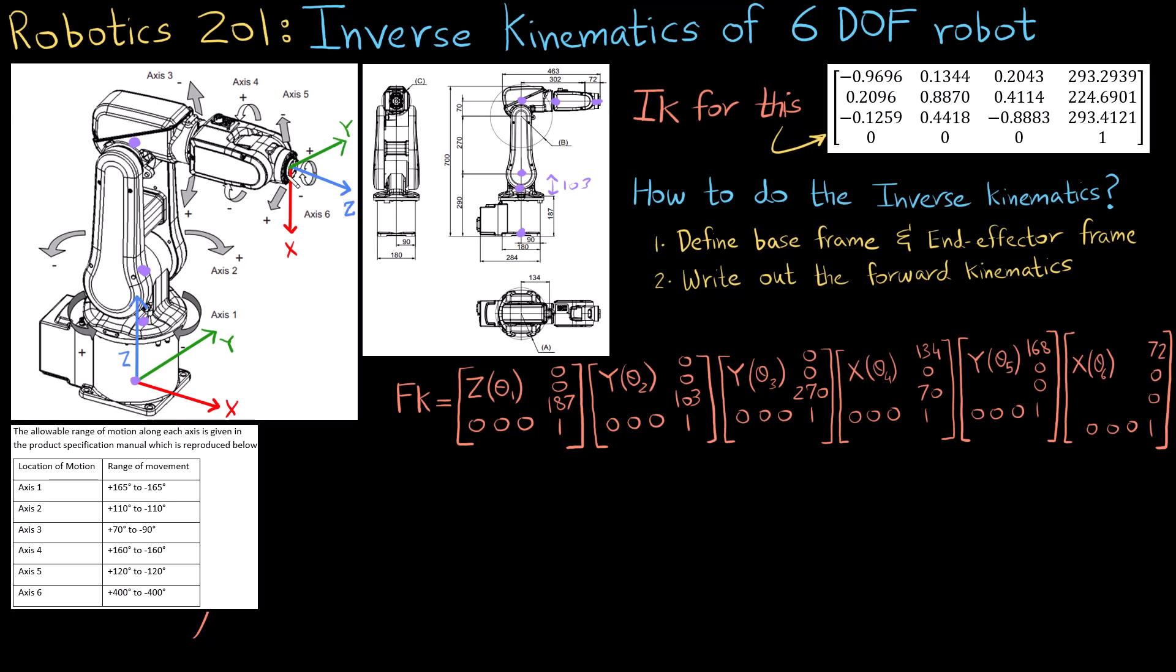So right now if I just draw it out really quick, right now what is happening is my x is here and my z is here. Once I do all of these transforms, my x is here and my z is here.